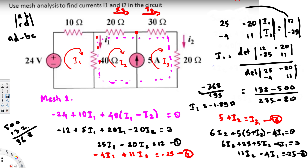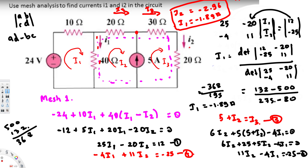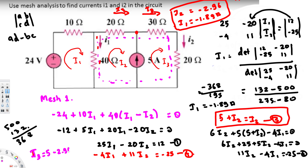For i2, we apply the same Cramer's rule process — swap the constants into the second column, find the determinant, and divide by the original matrix determinant. This gives i2 = negative 2.96 amperes. Now we can find i3 using the KCL equation: i3 = 5 + i2 = 5 + (negative 2.96) = 2.04 amperes.